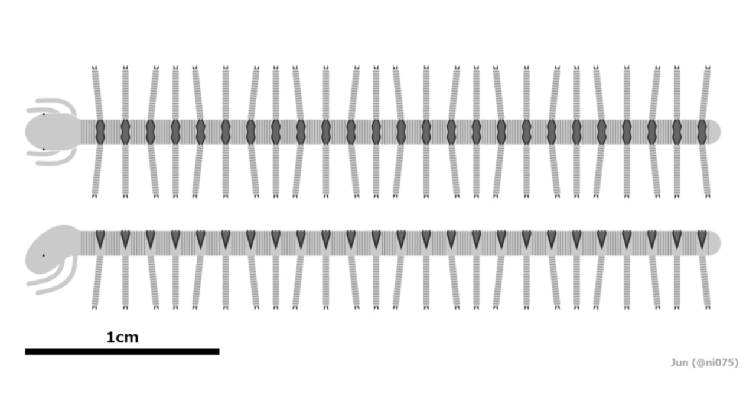As a result of this discovery, the researchers believe that the segmented brains and heads seen in modern arthropods may have evolved separately from the rest of the nervous system, which likely became segmented first.